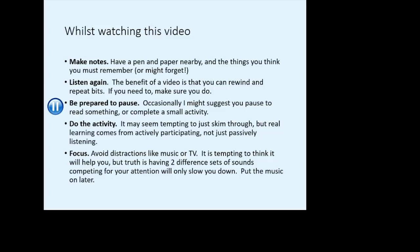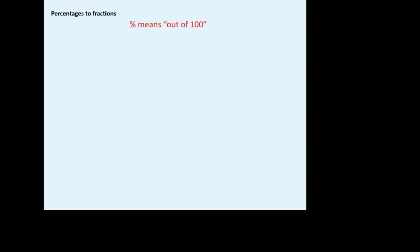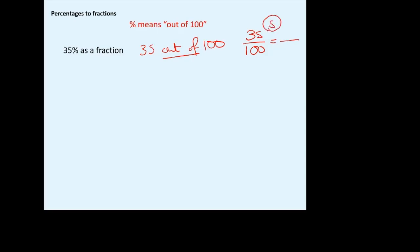Starting with percentages to fractions: the most important thing you need to remember about percent is that it is always out of 100 — that's what percent literally means. So if I want to convert 35% to a fraction, I'm going to say 35 out of 100. That's what the fraction line really means. Now check if you can simplify — they're both in the five times table, so 35 ÷ 5 is 7 and 100 ÷ 5 is 20, giving 7/20. There will often be a mark for simplifying. Three percent as a fraction is simply 3 out of 100.